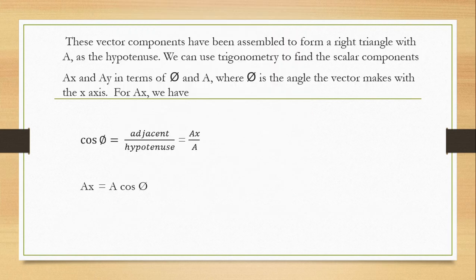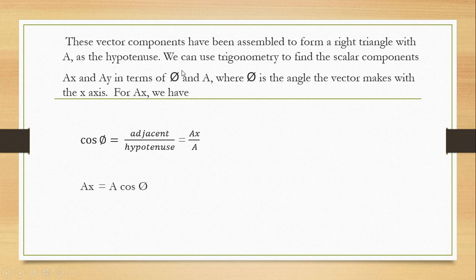These vector components form a right triangle, with A as the hypotenuse — as seen in the figure. We can use trigonometry to find the scalar components Ax and Ay in terms of theta. Theta is the symbol for an angle, specifically the angle the vector makes with the x axis.